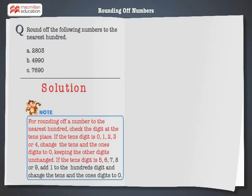If the tens digit is 5, 6, 7, 8, or 9, add 1 to the hundreds digit and change the tens and the ones digit to 0.